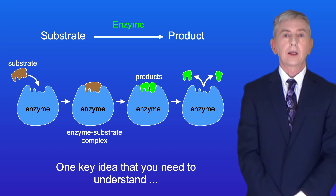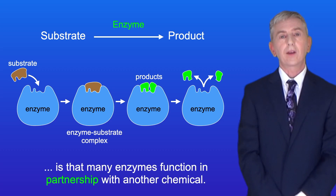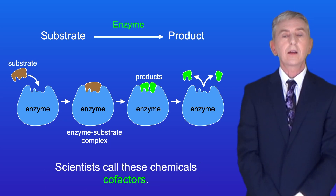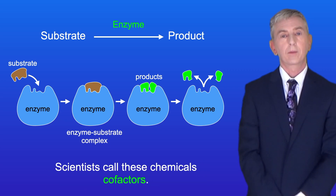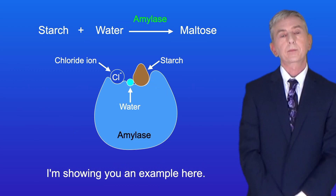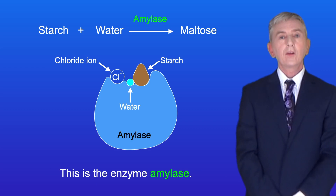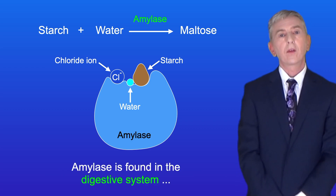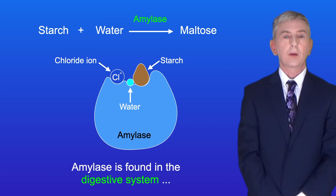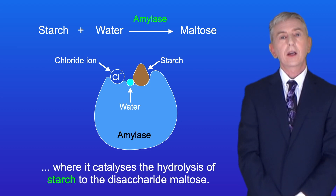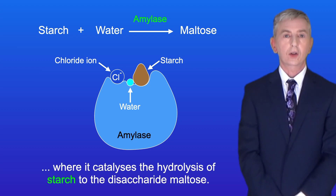Now one key idea you need to understand is that many enzymes function in partnership with another chemical, and scientists call these chemicals cofactors. I'm showing an example here. This is the enzyme amylase. Amylase is found in the digestive system, where it catalyzes the hydrolysis of starch to the disaccharide maltose.